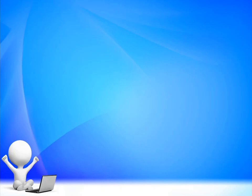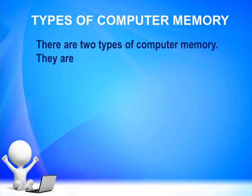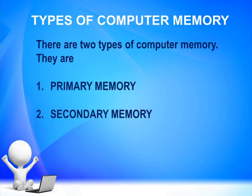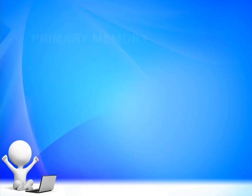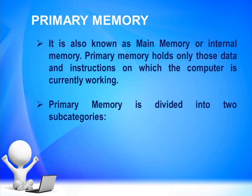Let us discuss the types of computer memory. There are two types: primary memory and secondary memory. Let us start with primary memory. It is also known as main memory or internal memory. Primary memory holds only those data and instructions on which the computer is currently working. Primary memory can be divided into two subcategories: RAM, that is random access memory, and ROM, that is read only memory.